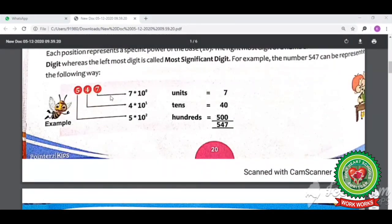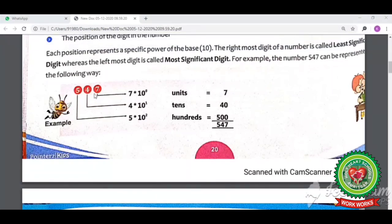See students, let's suppose I am taking a number 547. In 547, the 7 is the least significant digit and 5 is the most significant digit. And this equation or value you can write in this form also: you have to start from the right side, from the least significant digit, 7, 4, and then 5.